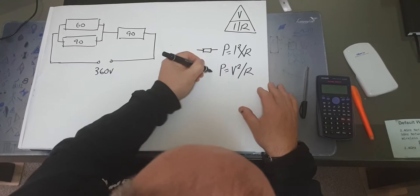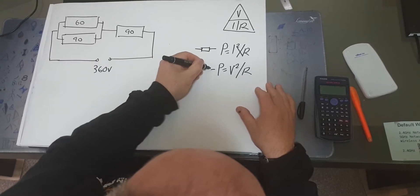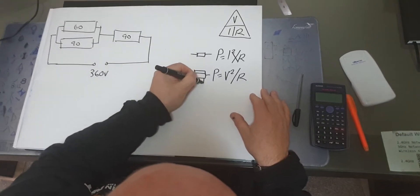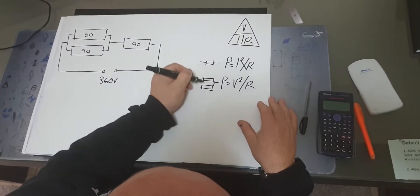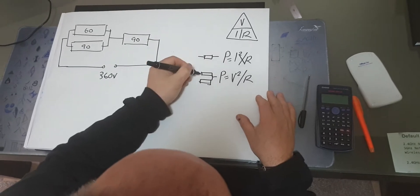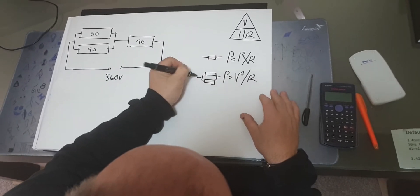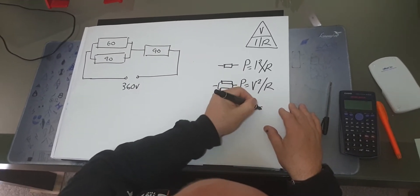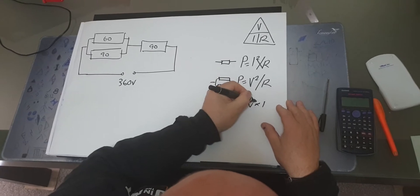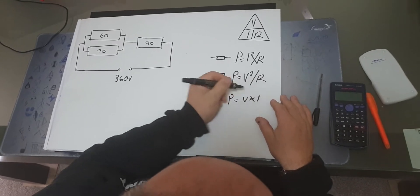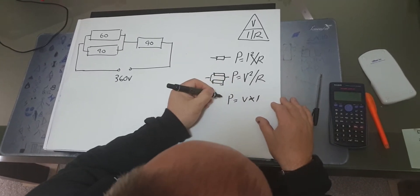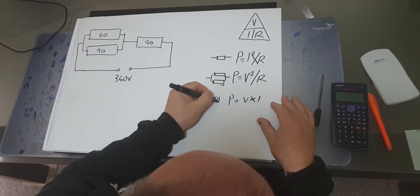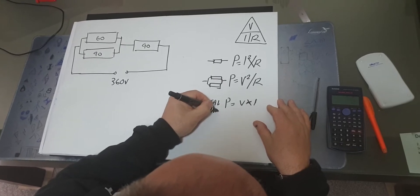The V squared over R formula we use more when we've got a voltage drop across two resistors in parallel. The last formula is P equals V times I, which would be used if we're looking for the total power.